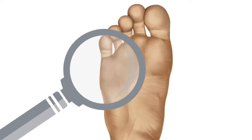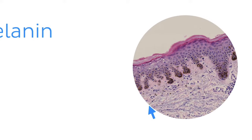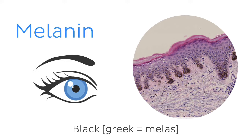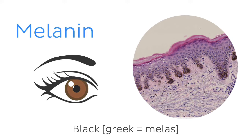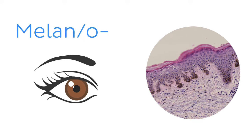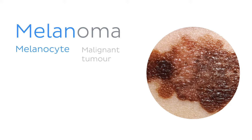Looking deeper into the skin, we have the term melanin — the pigment that gives our skin, hair, and eyes their color. The cells which produce it are known as melanocytes. Terms related to this pigment unsurprisingly often contain the root word melan or melano. For instance, a melanoma describes a tumor arising from abnormal proliferation of melanocytes.